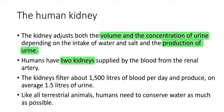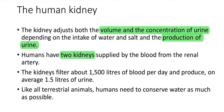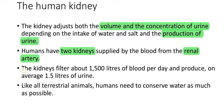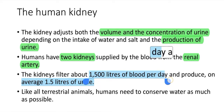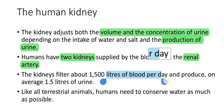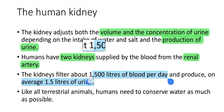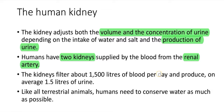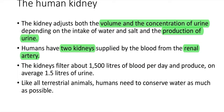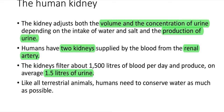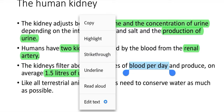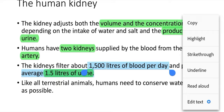Humans have two kidneys. Blood from the renal artery supplies the kidneys. The kidney filters approximately 1,500 litres of blood per day, producing on average 1.5 litres of urine.